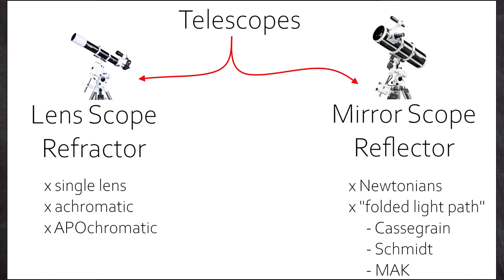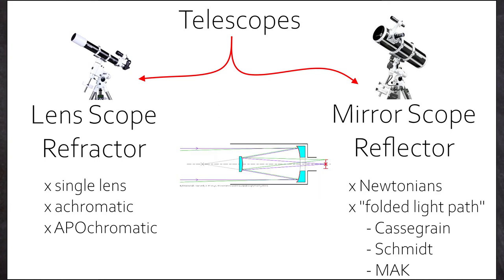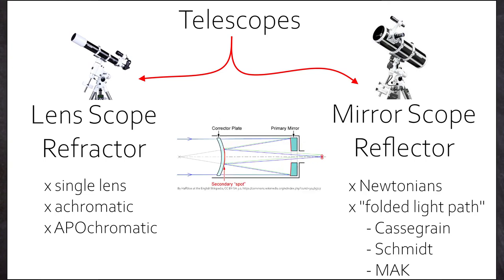The scopes with a main mirror, called reflectors. Newtons tend to be the most popular design, the Cassegrain and others fold the light path to shorten the tube. Additional lens covers try to correct for coma aberrations at the image edges.